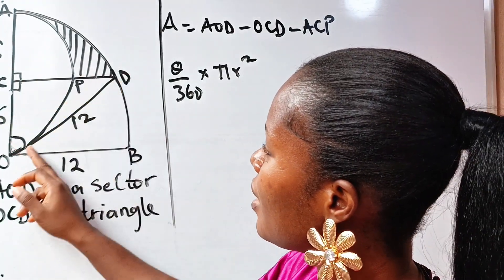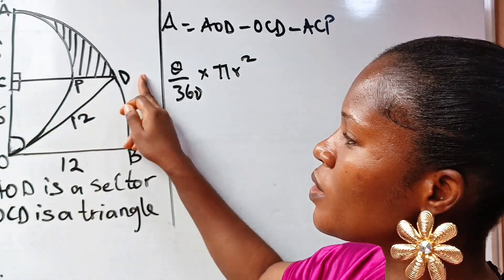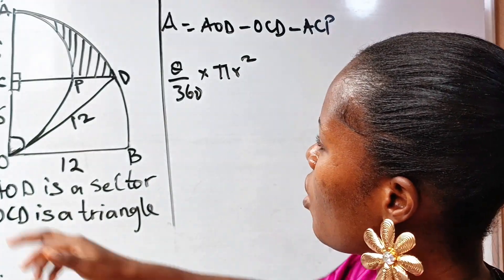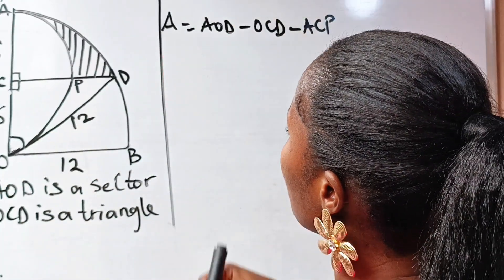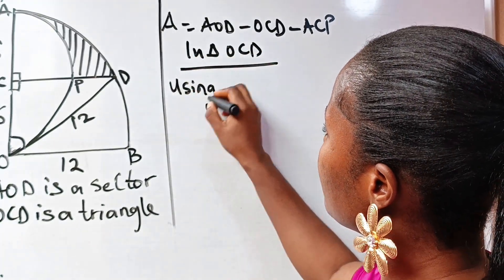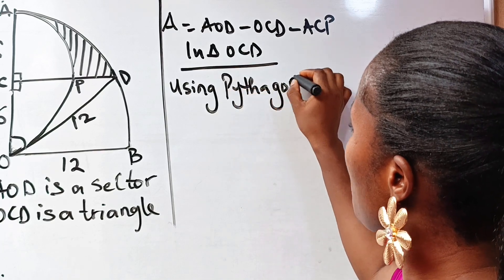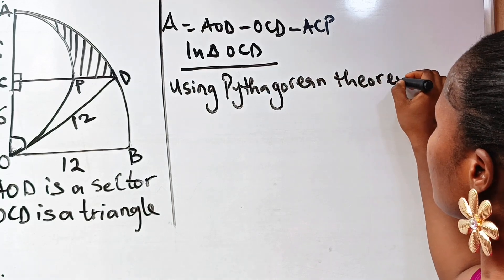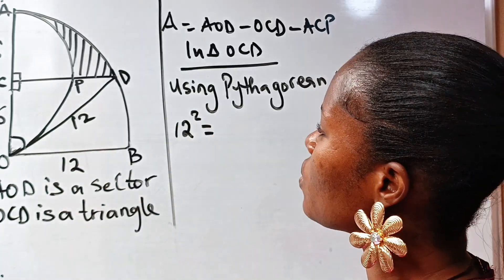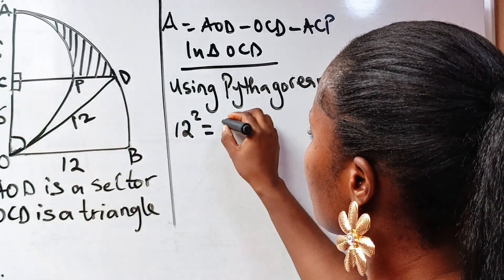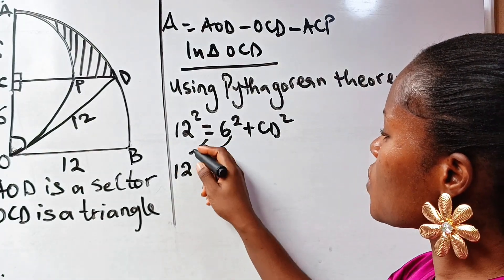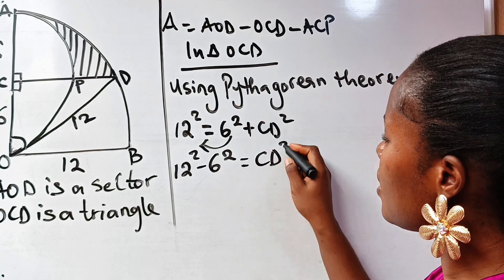If we look at this particular triangle now, we can see that to get CD we can use the Pythagorean theorem. In triangle OCD, using the Pythagorean theorem, 12 is our hypotenuse. So 12 squared equals 6 squared plus CD squared. Transferring, we have 12 squared minus 6 squared equals CD squared.